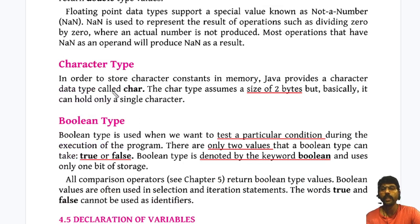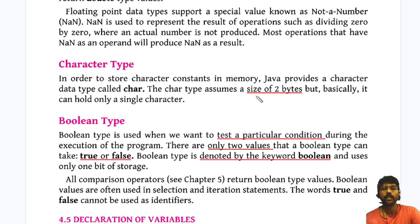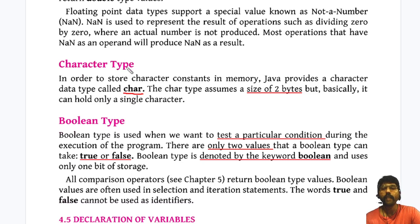The next one is called the character type. The character data type takes two bytes to store and is indicated by the keyword char. Using char, we can store any type of character constants.